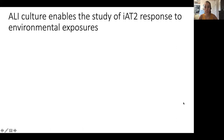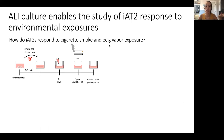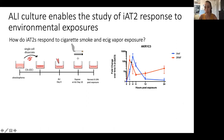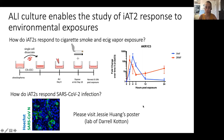The purpose of this model system is to allow the study of the type 2 cell response to environmental exposures. For example, this enables us to ask how type 2-like cells respond to cigarette smoke and e-cig vapor exposure. They can be passaged to air-liquid interface and exposed to Juul — the most popular e-cig — or cigarette smoke. We can see, for example, that there is a difference in the kinetics of the transcriptional response to these exposures; shown here by qPCR for the smoke-responsive gene alpha-ketoreductase 1C3, which peaks at different time points when exposed to e-cig vapor compared to cigarette smoke. We can also ask how iAT2s respond to infection, including SARS-CoV-2. For more information on that project, please visit Jesse Huang's poster in the lab of Darryl Kotton.